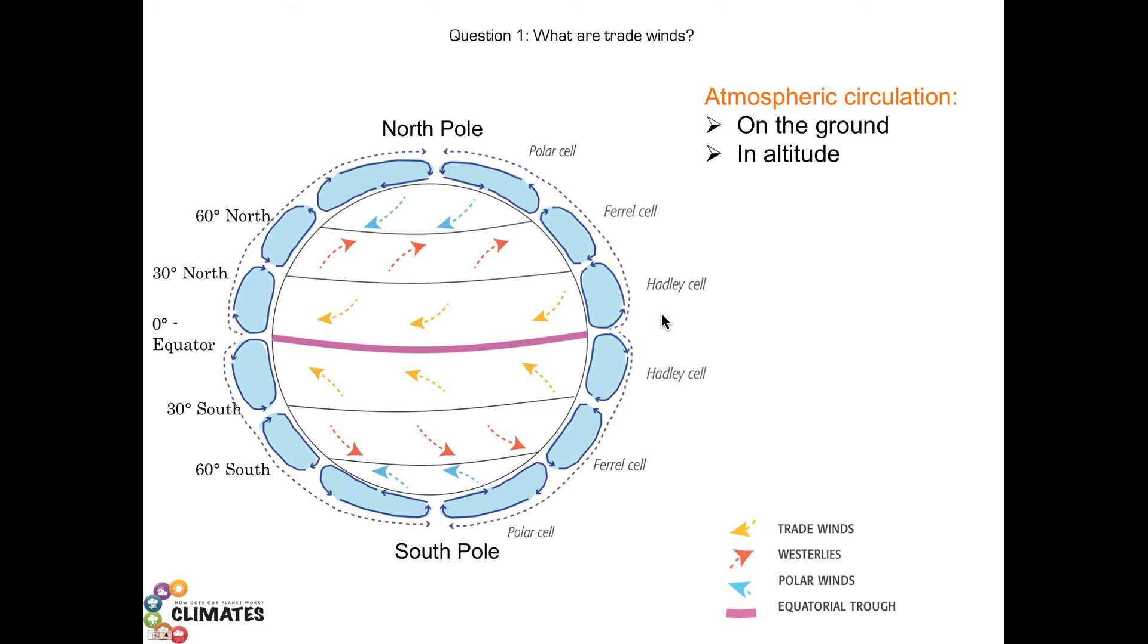It goes either toward the north pole or toward the south pole. Let's take the example when it is directed to the north pole. A fraction of the wind in altitude will cool enough to descend to the surface around a 30 degree latitude. When back on the ground, winds go south to the equator and indeed close the Hadley cell.